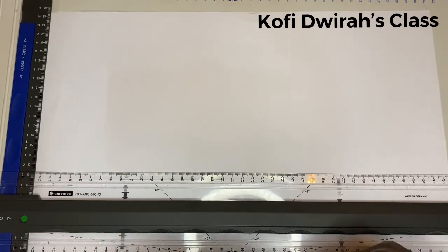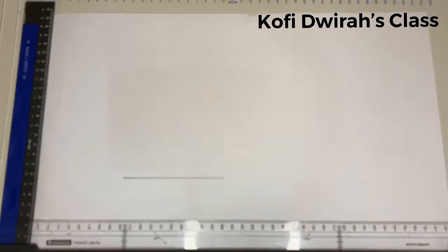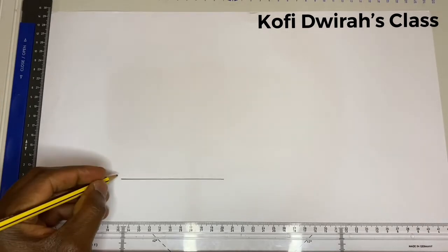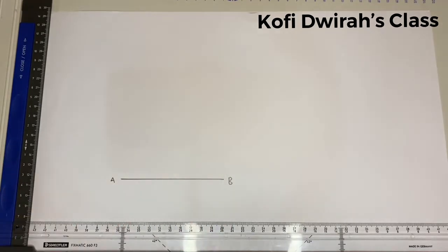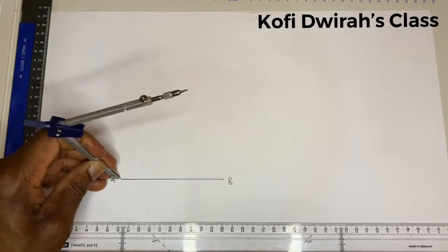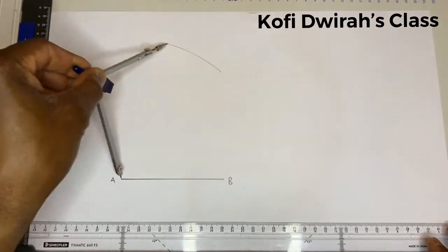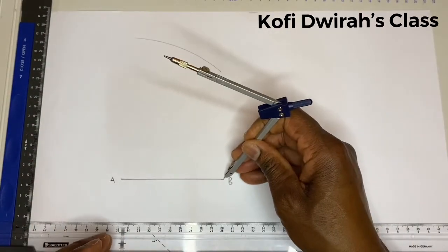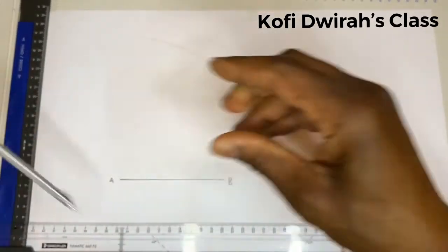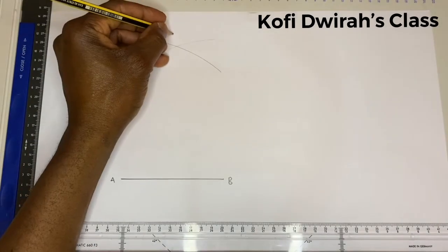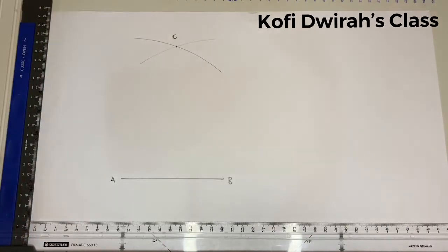We have 15 cm. So we have this point to be A and B, and at point A we draw our arc. At point B we draw our arc for point C. There we are going to draw our triangle.